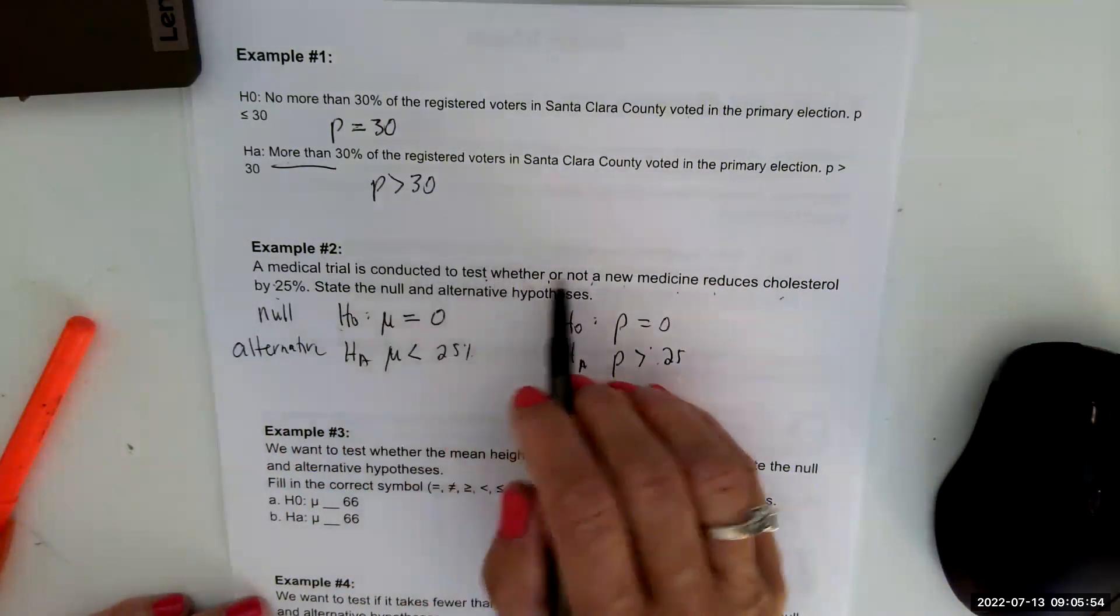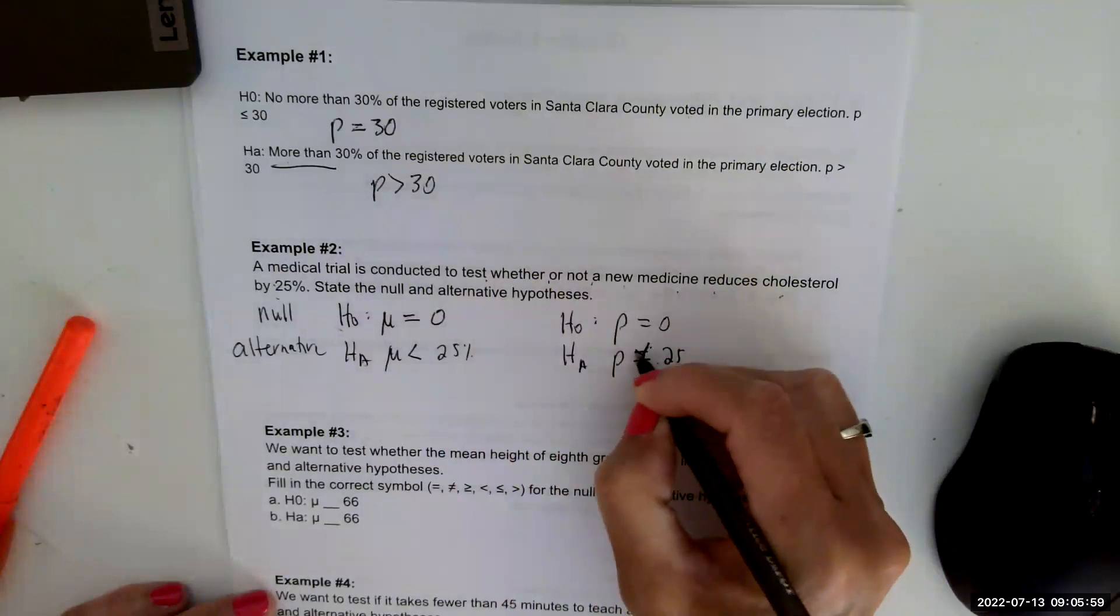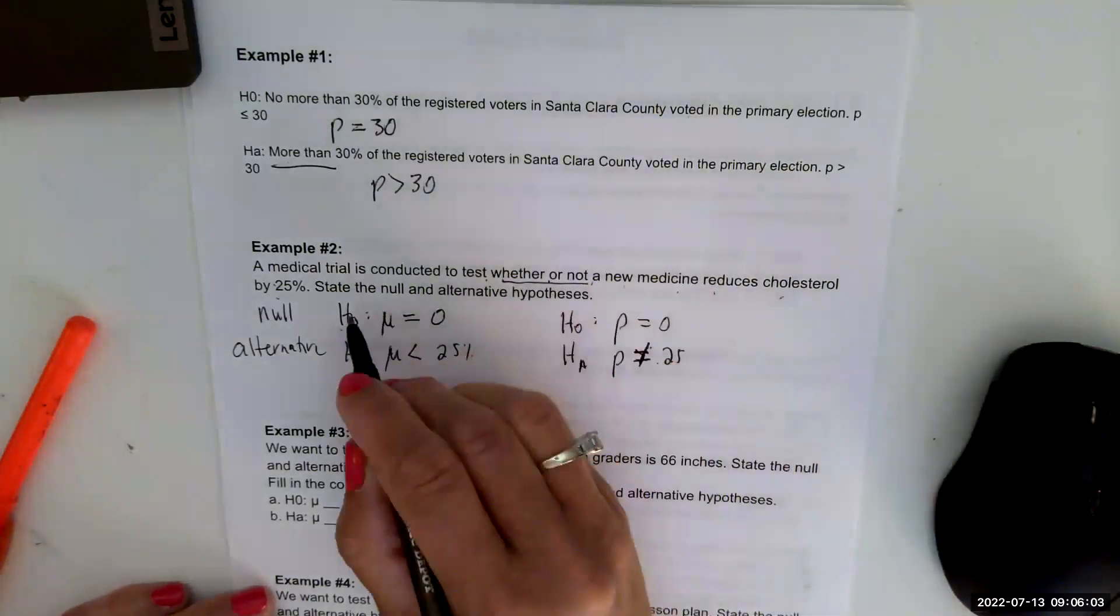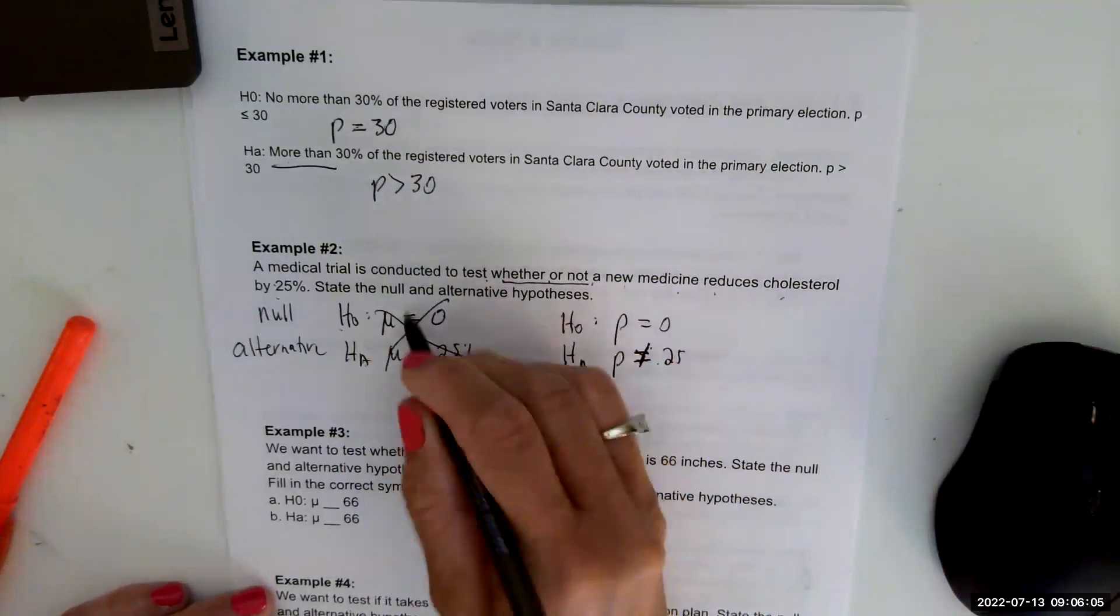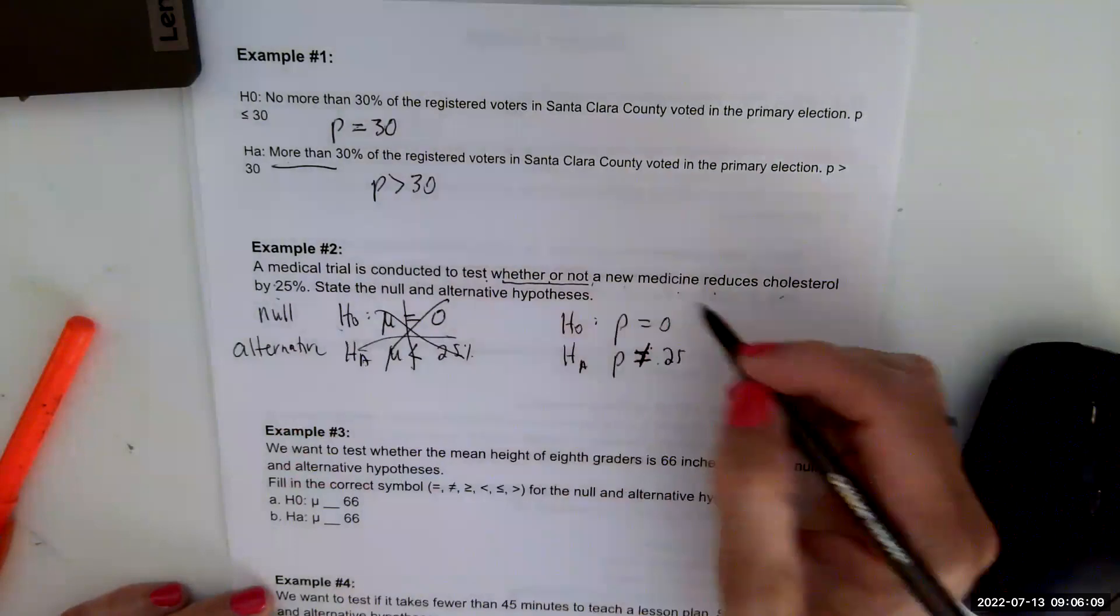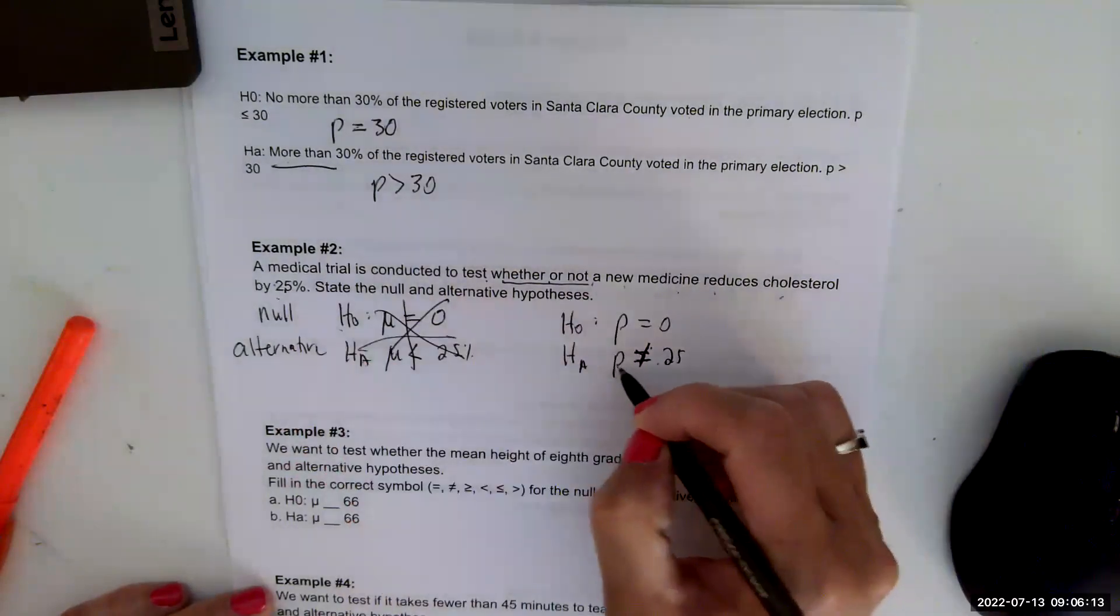And it says whether or not, so it didn't say more than 25 percent, just said whether or not, so we're going to do a not equal to. Because they talked about percentages, we're going to go with, instead of just the level of cholesterol, we're going to talk about the increase or decrease as a percentage, so that's why I chose proportion.